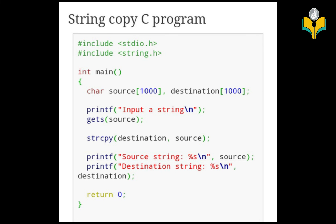Then we print both arrays: printf source string equal to %s, printing the source array which contains 'hello', and printf destination string equal to %s, printing the destination array which also contains 'hello'. Both arrays now have the same value. That is the simple string copy program using strcpy.